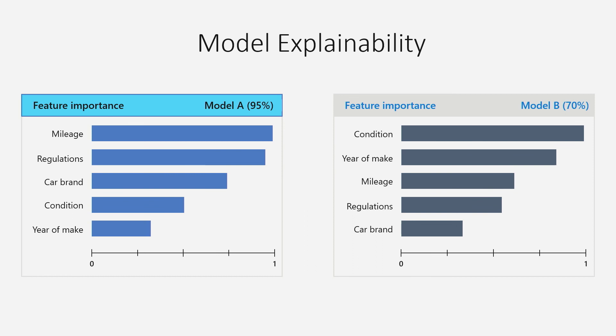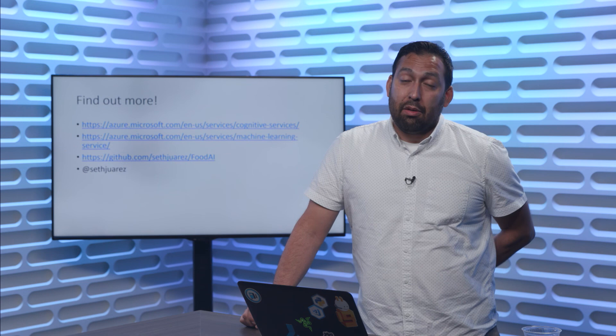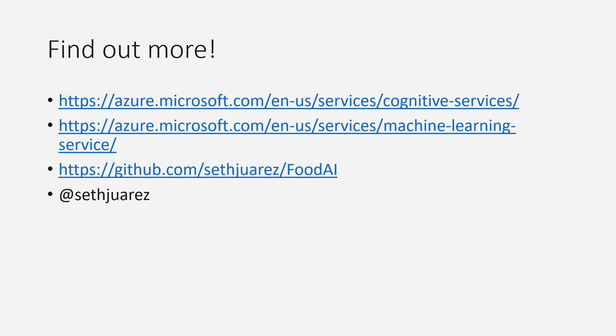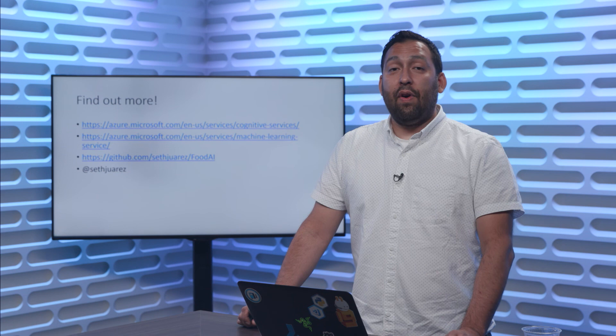We've spent just a little bit of time talking about AI and machine learning. To me, it's probably one of the coolest fields because you're letting the computer figure out how to create the algorithms. If you'd like to find out more or see the code, go to github.com/SethJuarez and look at Food AI, or ping me on Twitter at Seth Juarez. Hopefully this was helpful to demystify artificial intelligence, machine learning, and deep learning. Thank you so much for watching — see you next time. Take care.